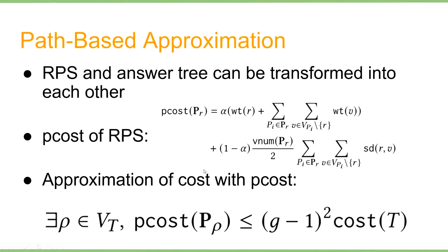We give the schedule of our path-based approximation. Since an RPS and its answer tree can be easily transformed into each other, our solution is simply finding the optimal RPS and transforming it to an answer tree. We carefully design a p-cost function for RPS to assure that minimizing p-cost guarantees the approximation ratio. Specifically, p-cost of an RPS is a linear combination of node weights and the v-norm times the semantic distance between the root and all vertices in the RPS. We can then prove an approximation ratio of (G-1) squared.